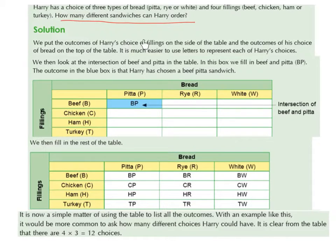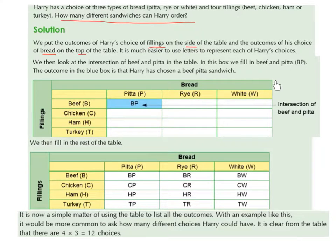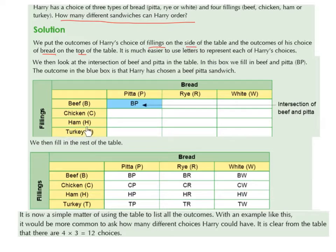We put the outcomes of Harry's choice of fillings on the side of the table, and the outcomes for his choice of bread on the top of the table, or this could be done vice versa. It is much easier to use letters to represent each of Harry's choices. So we have bread going along the top: pitta represented by capital P, rye represented by capital R, and white represented by capital W. And then we have the fillings along the side: beef represented by capital B, chicken represented by capital C, ham represented by capital H, and turkey represented by capital T.